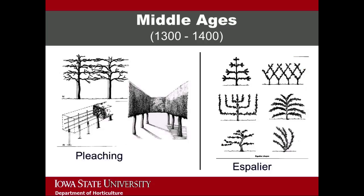Additional examples of new gardening practices that became popular during the Middle Ages were pleaching and espalier. They are similar in concept. Pleaching results in a three-dimensional plant sculpture, while the practice of espaliering creates a two-dimensional plant form, usually trained onto a fixed structure such as a wall or a fence.